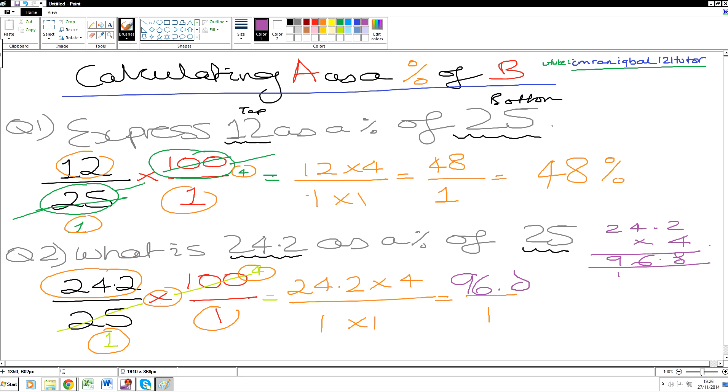Now students, before you start worrying 'oh, I've got a decimal on top of a fraction,' it doesn't matter for this type of question because 96.8 divided by 1 will give us a grand total of 96.8 percent. And that's the end of this particular small short video.